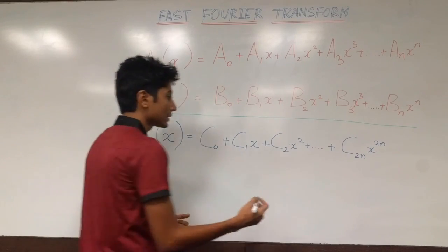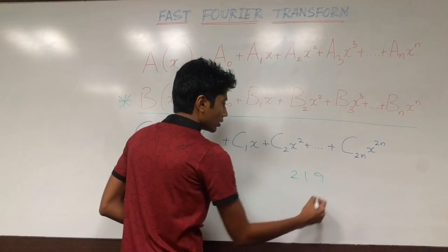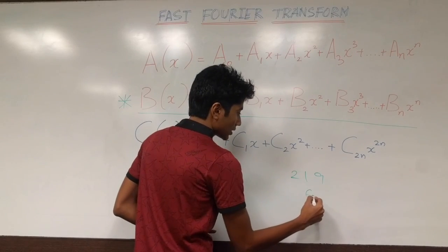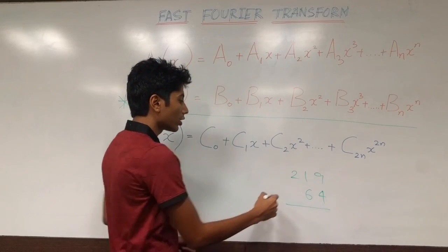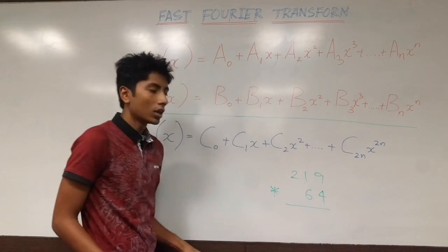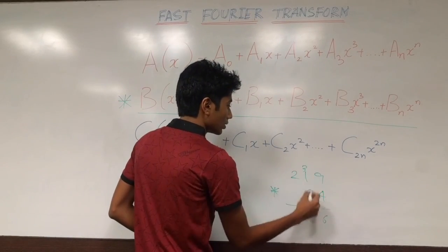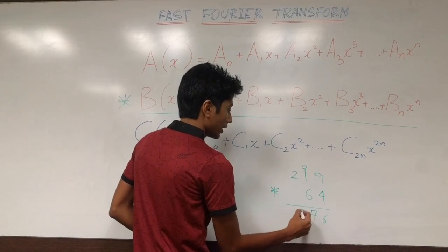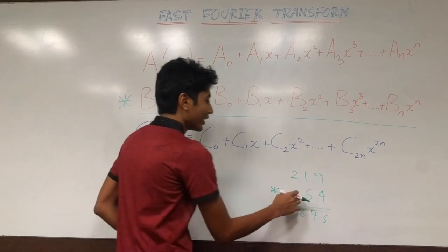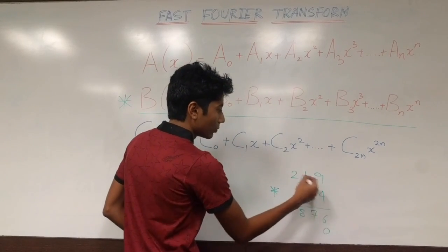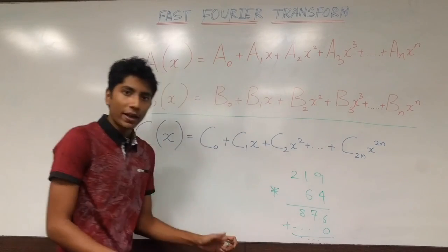For example, let's take two random numbers: 219 and 64. We need to multiply these two numbers. One of the ways is the school technique — you go 3, then 7, then 8, add a 0 here, then multiply with 6, and then add the two results. That's fine.